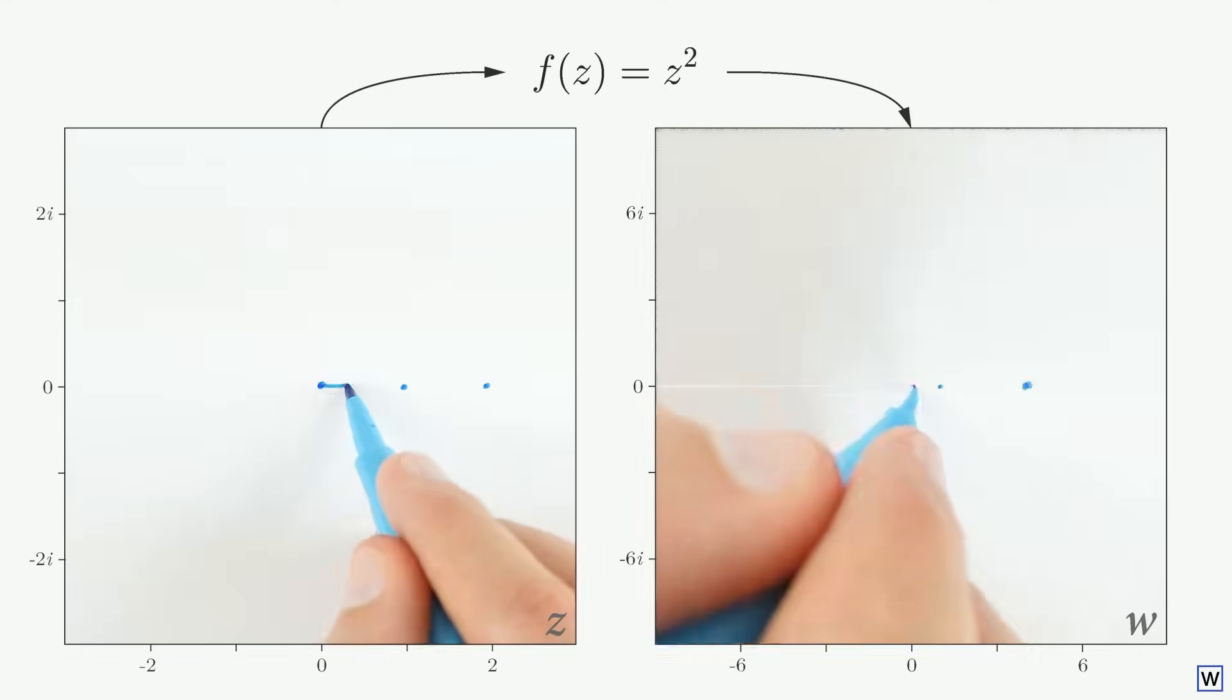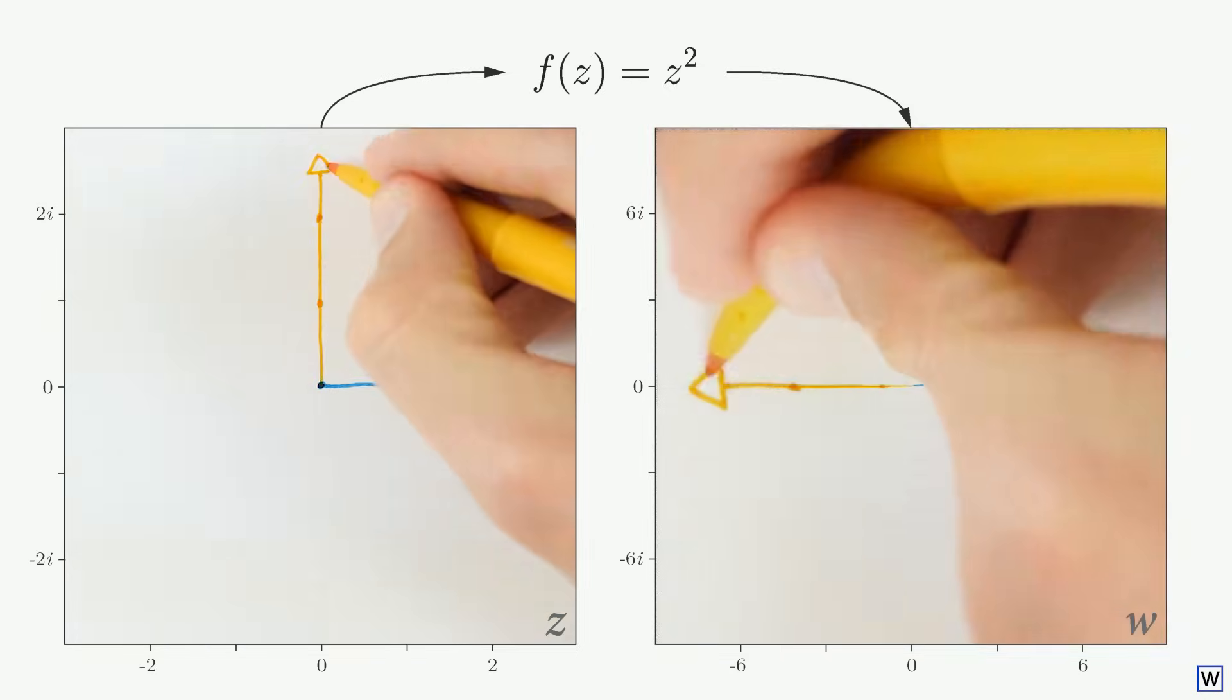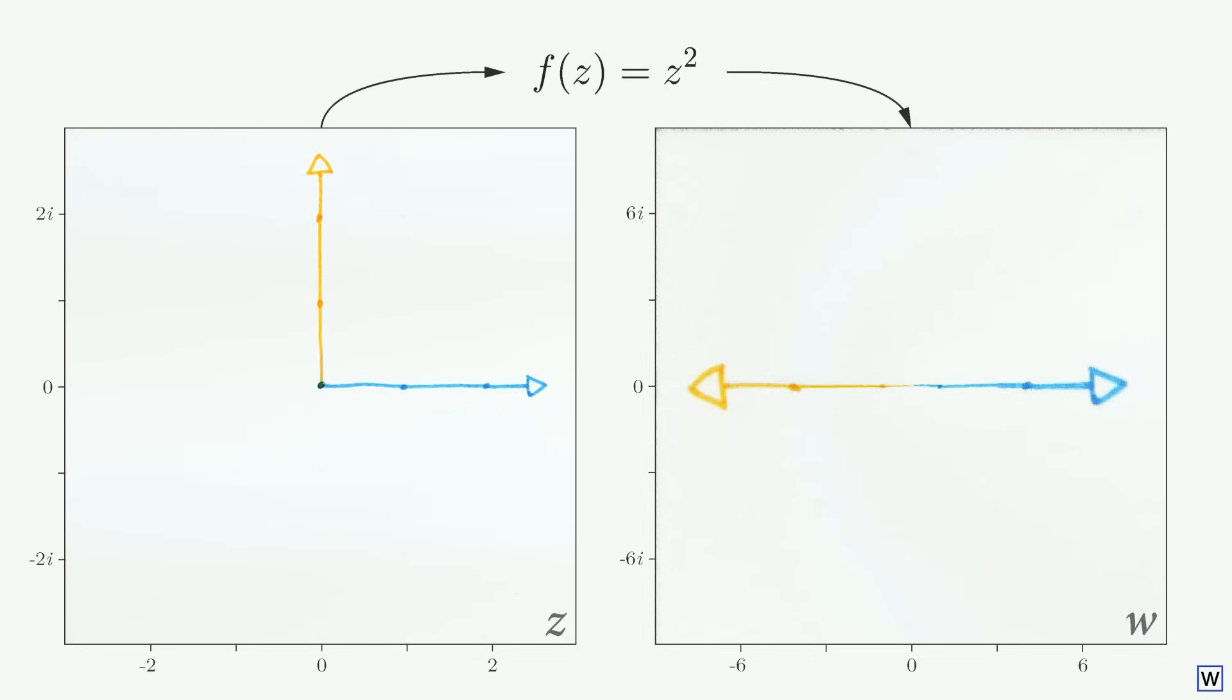Let's test the idea that our function will double the angle of its input values. What kind of shape should we draw to test this idea? Ideally, we want to draw a shape that is made up of points that are all at the same angle, to see if our function changes all points of the same angle in the same way. So what kind of shape is made up of points all at the same angle? This turns out to be a straight line through the origin.